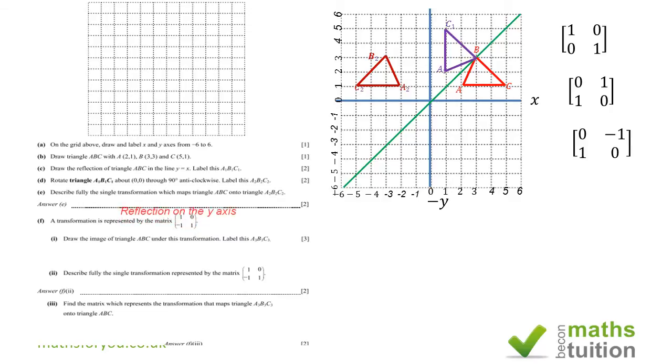In effect, that is reflection on the y-axis, because from A to the y-axis is 2 units and from the y-axis to A2 on the same line is 2 units. From B to the y-axis is 3 units and from the y-axis to B2 is also 3 units. And from C to the y-axis is 5 units and from the y-axis to C2 is also 5 units. So that's reflection.